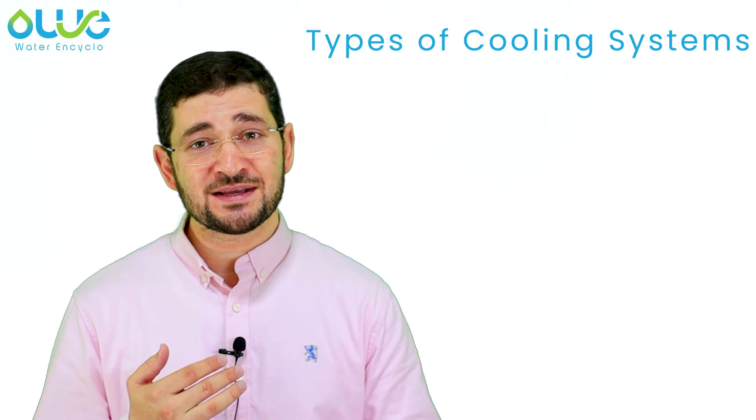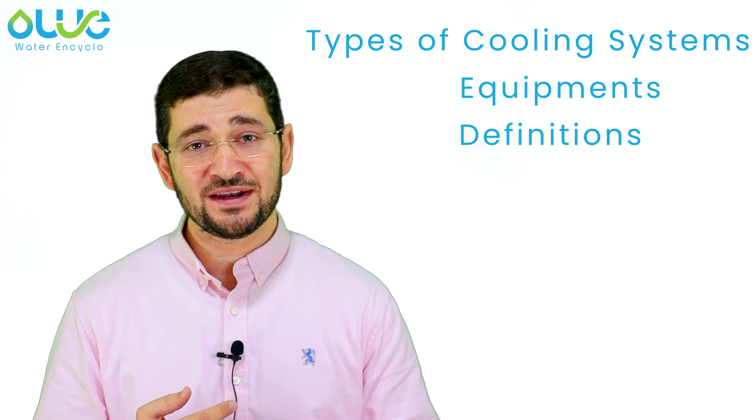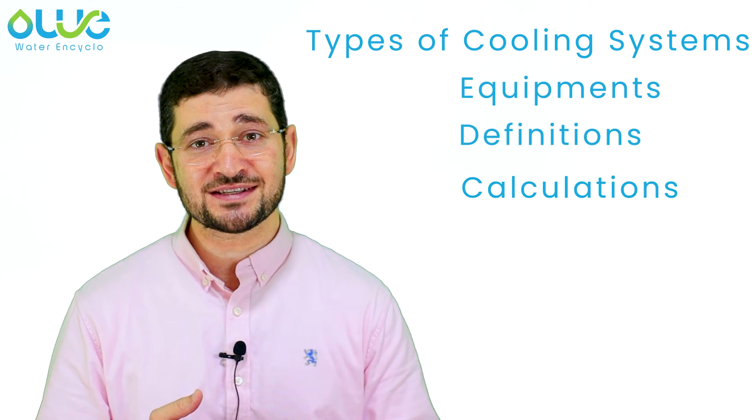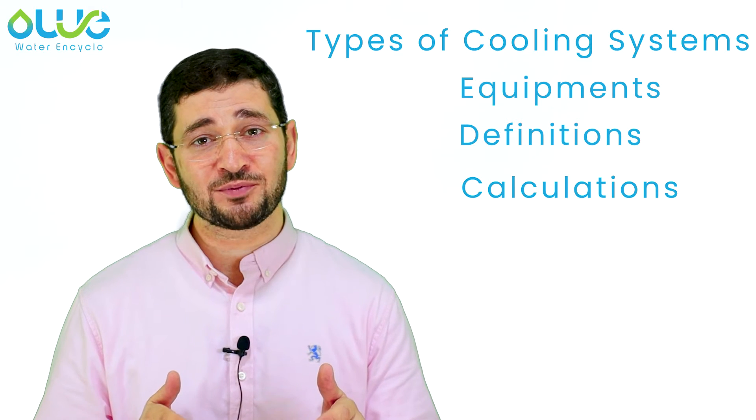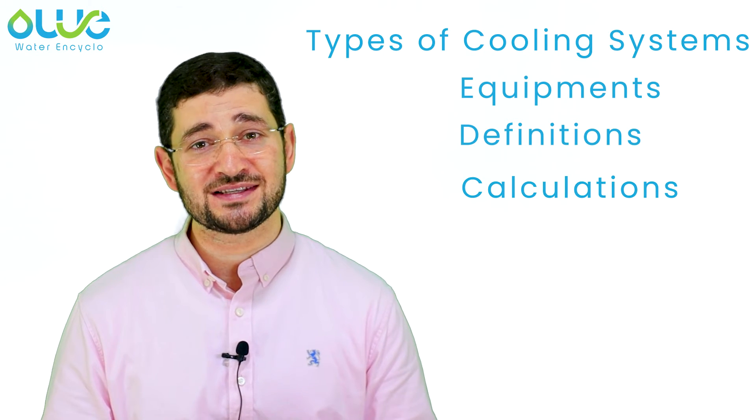This course of more than eight filming hours is designed to give you an overall insight about different things related to water treatments of cooling systems. We will start together discussing different types of cooling systems, equipment, definitions, calculations, and the main water-related problems found in cooling systems. Water chemistry parameters are also going to be discussed to give you an overview about water quality parameters that help you understand the operation of your cooling system.